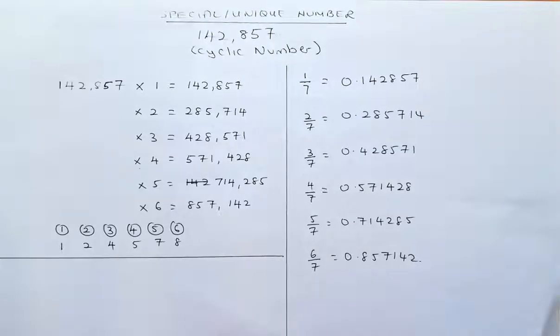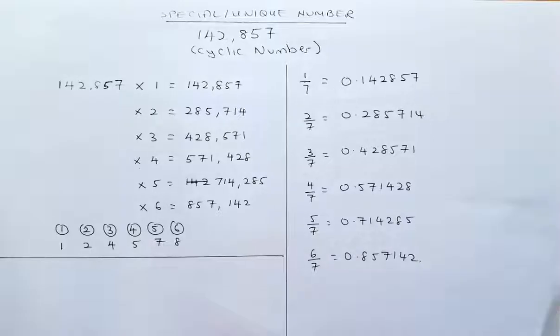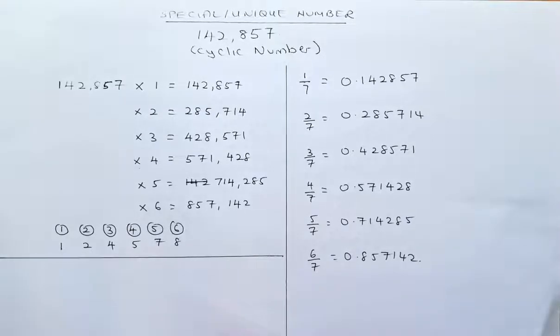This number is made up of 6 different digits: 1, 2, 4, 5, 7, and 8. There's a pattern in both multiplication by 1 to 6, as well as fractions from 1/7 to 6/7.